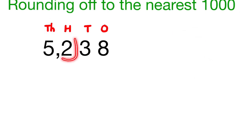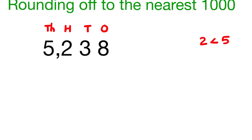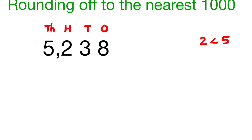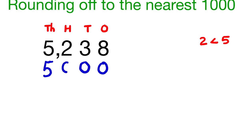Here, the digit in the hundreds place is 2 and it is less than 5. So, there will be no change for the digit in the thousands place. We write 5 in the thousands place. Since we are rounding off to the nearest thousands, we write 0 in the ones place, tens place and hundreds place. So, the number 5,238 is rounded off to 5,000.